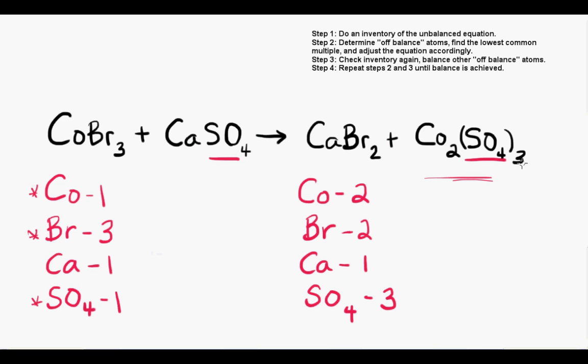The cobalt-3 sulfate on the right side of the equation has three sulfate groups, but calcium sulfate on the left only has one. We can balance sulfate by adding a coefficient of 3 in front of the calcium sulfate, like this.